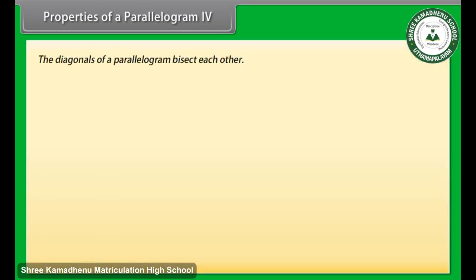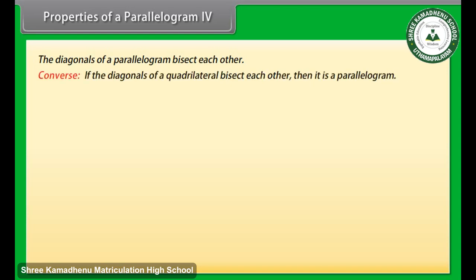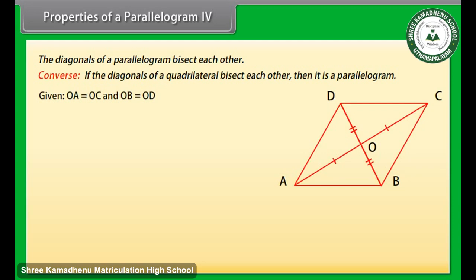Properties of a parallelogram 4. The converse of this theorem results in one more theorem. The converse says: if the diagonals of a quadrilateral bisect each other, then it is a parallelogram. Let us prove it. It is given that OA is equal to OC and OB is equal to OD. Angle AOB is equal to angle COD because these are vertical angles.